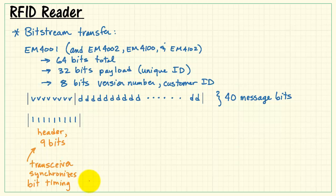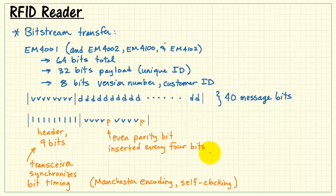Now, how do we get 64? Well, we add 9 header bits, all 1. This is what the transceiver uses to synchronize the bit timing. Manchester encoding is used because it's a self-clocking technique. Then, every 4 bits of data, we insert an even parity bit. Parity is used for error detection.